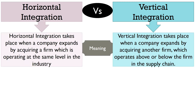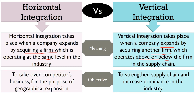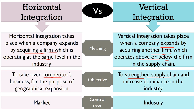Horizontal integration takes place when a company expands by acquiring a firm which is operating at the same level in the industry. On the other hand, vertical integration takes place when a company expands by acquiring another firm which operates above or below the firm in the supply chain. The objective of horizontal integration is to take over a competitor's business to create monopoly, geographically expand the business, and get access to the competitor's customers. Conversely, the objective of vertical integration is to strengthen the supply chain and increase dominance in the industry.